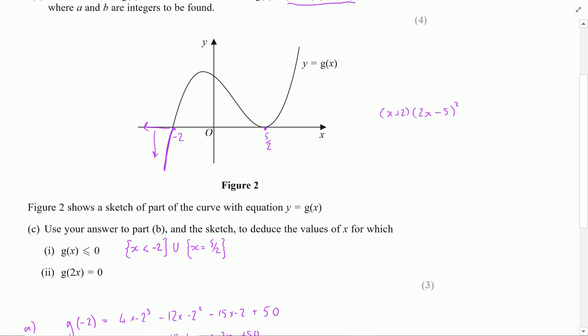For the second part, I want to find where g of 2x is equal to 0. We can think about this in one of two ways. Either we think about what happens to the graph so if we multiply inside the function, we're affecting the x-axis. This multiplying by 2 is actually going to be a contraction so I could try and sketch this graph of the contraction